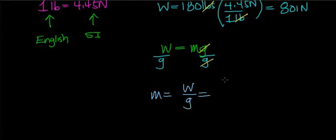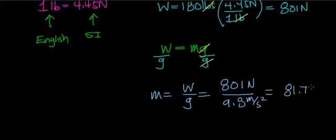Now your weight in the SI system is 801 newtons, and you're going to divide that by 9.8 meters per second squared. When you do that, you should get 81.7 kilograms.